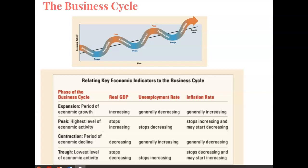We're going to hit a peak eventually, and economists won't know exactly when we're at our peak until we start contracting. So the peak is our highest level of economic activity. The real GDP stops increasing, the unemployment rate stops decreasing, and inflation stops increasing and may start decreasing.